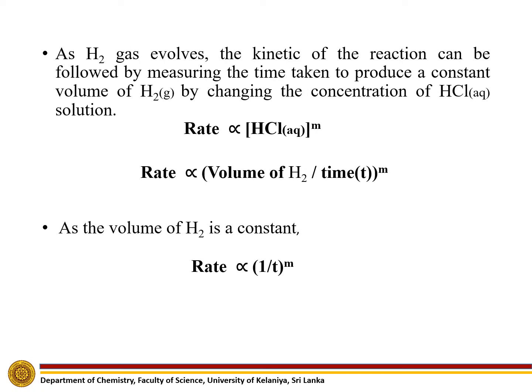As hydrogen gas evolves, the kinetics of the reaction can be followed by measuring the time taken to produce a constant volume of hydrogen gas by changing the concentration of HCl solution. The rate expression can be written as Rate ∝ [HCl]^m. Since we measure the time to collect a fixed volume of hydrogen, we rewrite this as Rate ∝ (Volume of hydrogen / time)^m. As the volume of hydrogen is constant, Rate ∝ (1/T)^m.